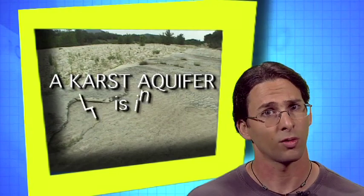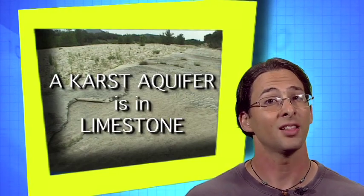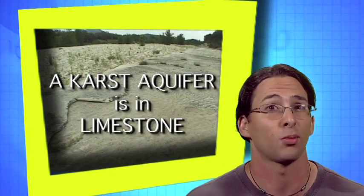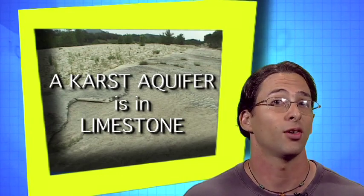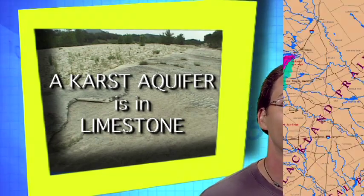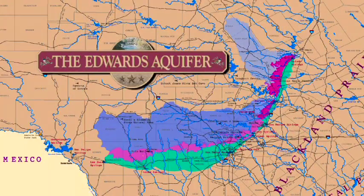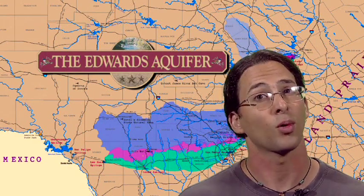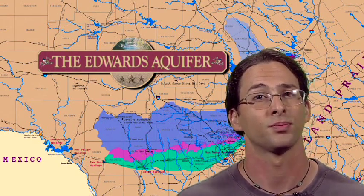Limestone is the matrix of karst aquifers. A karst aquifer is an aquifer that is in limestone. Limestone just happens to be the rock here in San Antonio, so it means that we have a karst aquifer. Our karst aquifer is called the Edwards Aquifer, and it is important that we learn about it. Previously, we learned about sand aquifers with a tank of sand, and now we're going to learn about limestone aquifers.